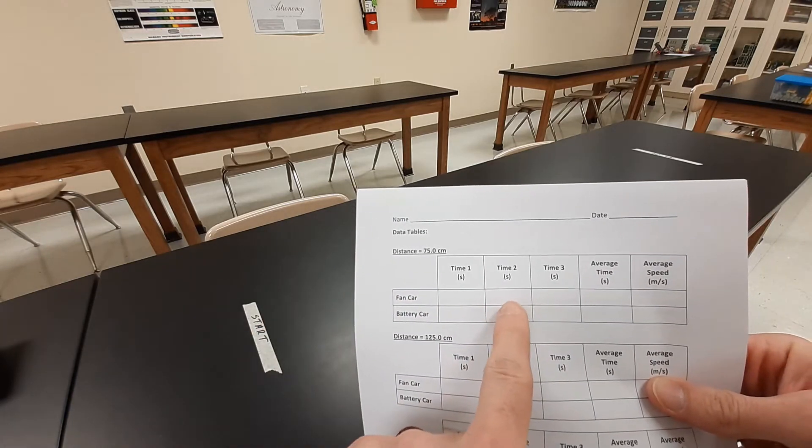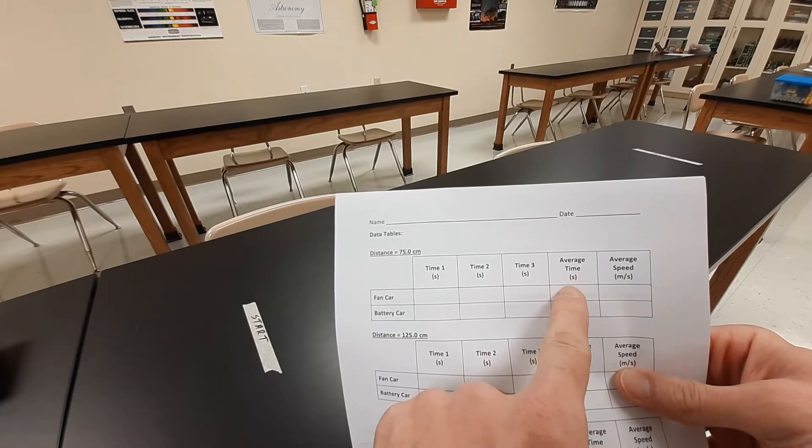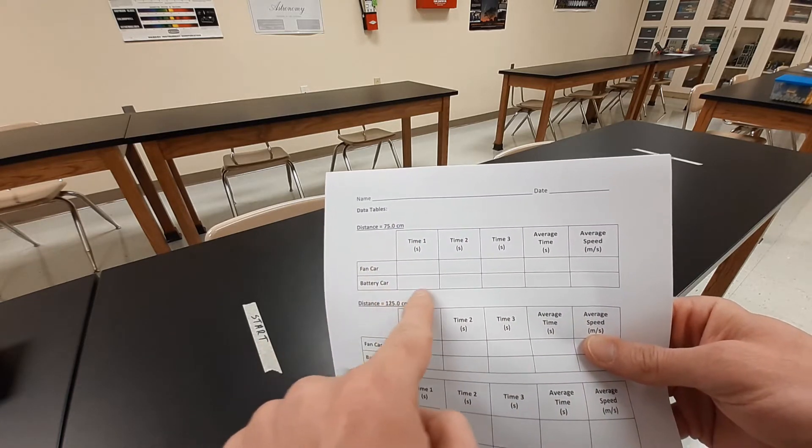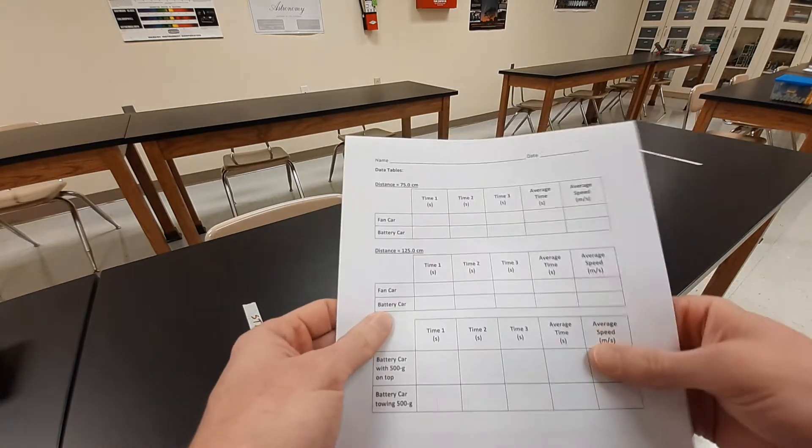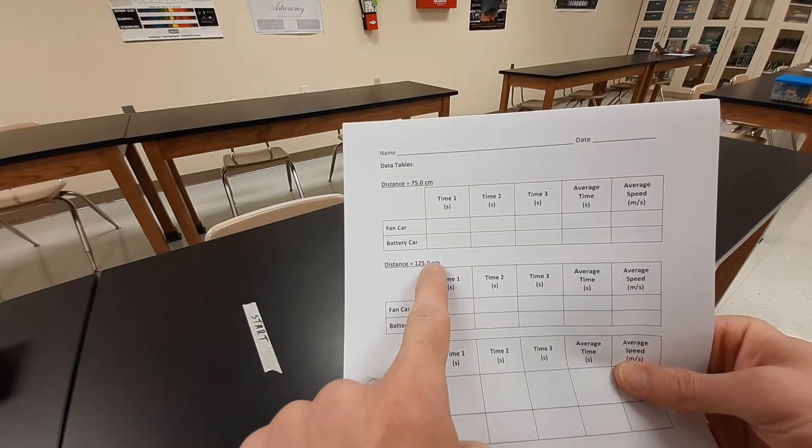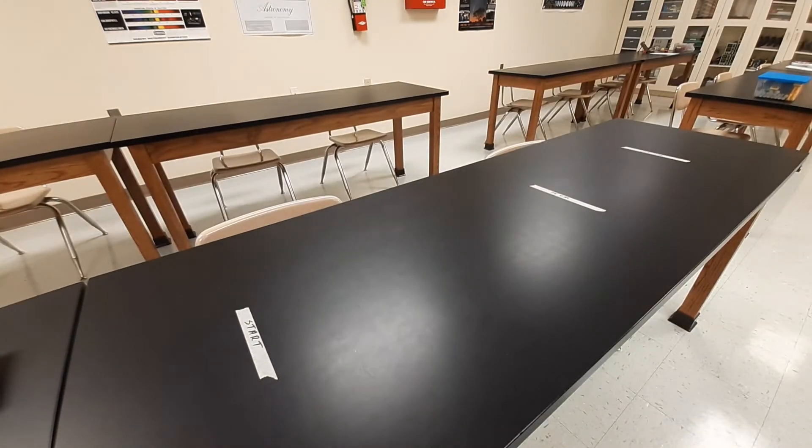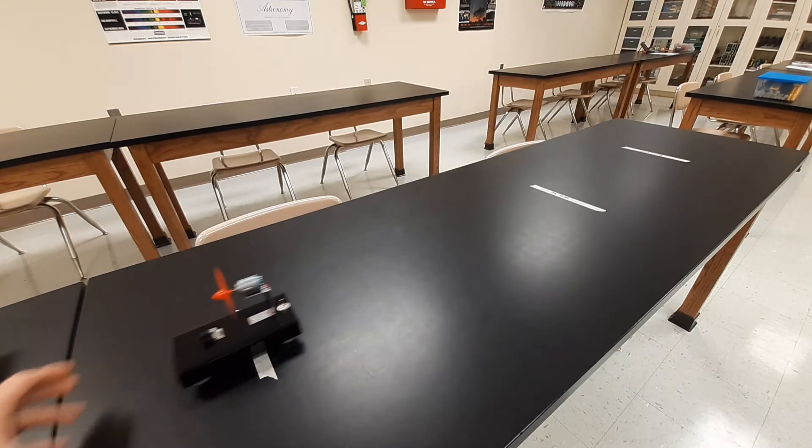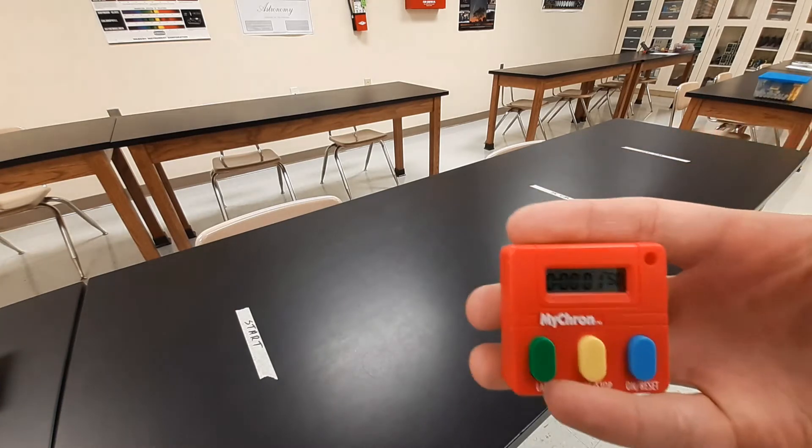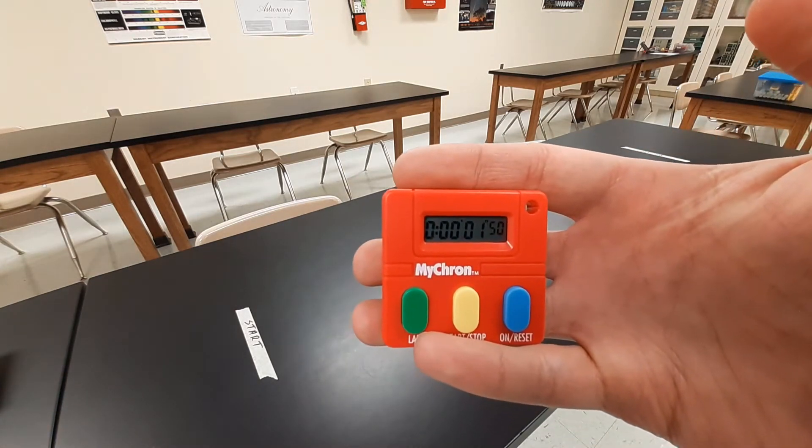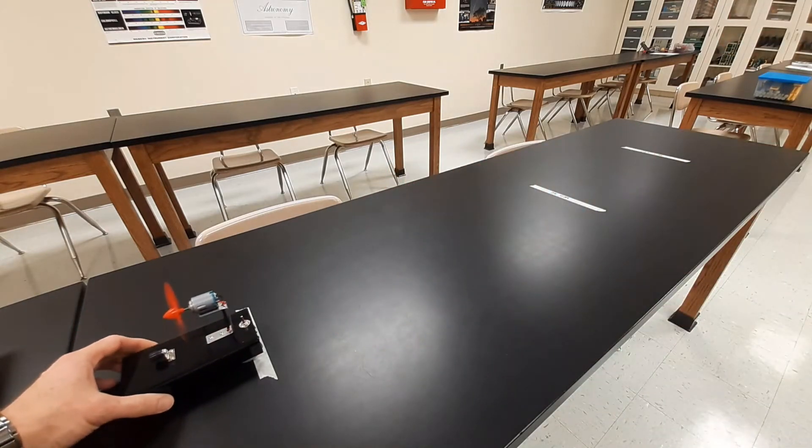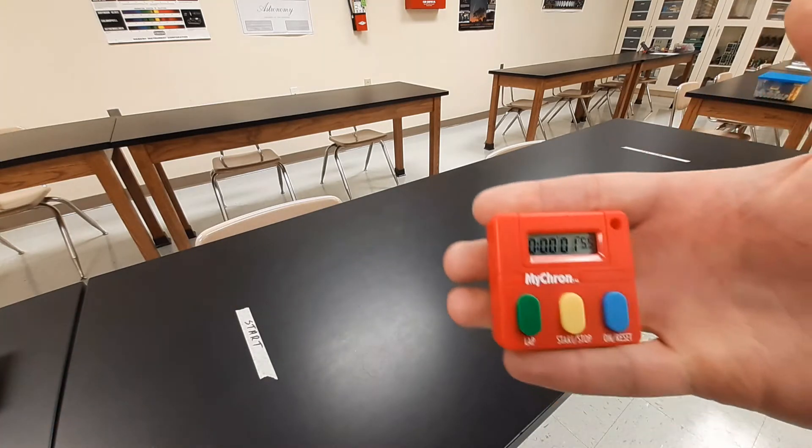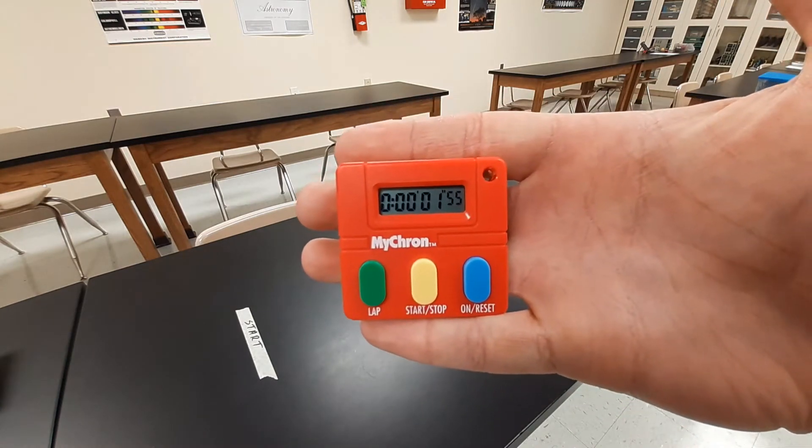All right so then I'm going to call out here in just a second trial 2 or time 2, time 3. You'll take the average of those three times so you can calculate the average speed using a distance of 75 centimeters. Do the same thing with the battery powered car. And then I'll be calling out the times for 125 centimeters. All right so let me clear this and we'll get the car ready for test 2. Go. All right that time 1.50 seconds on number 2. One more time with this car. All right that third trial on the fan car 1.55 seconds.